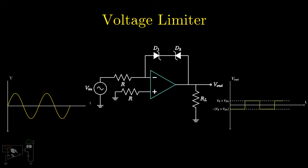Hence, the output is limited between Vz plus Vd2 and minus Vz plus Vd1.